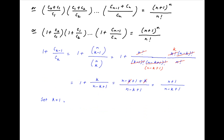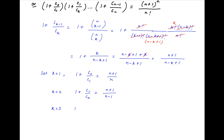Now set k equal to 1: we get the first term on the left hand side which is 1 plus c0 upon c1, and this is equal to n plus 1 divided by n. Put k equal to 2: we get the second term which is 1 plus c1 upon c2, equal to n plus 1 divided by n minus 1. Similarly put k equal to 3: the third term is equal to n plus 1 divided by n minus 2. So on and so forth — put k equal to n: the last term on the left hand side is equal to n plus 1 divided by 1.